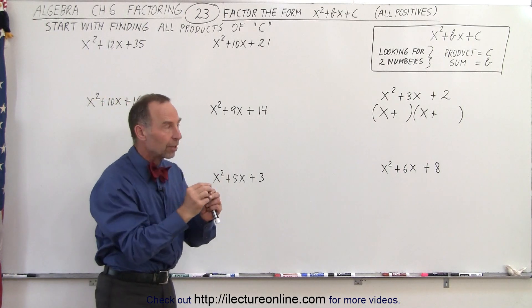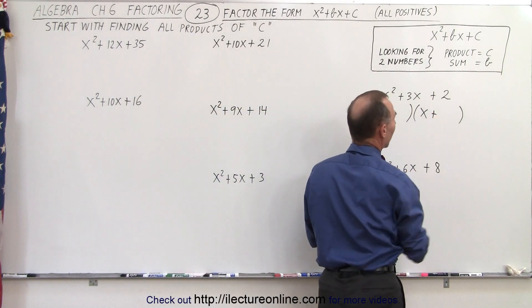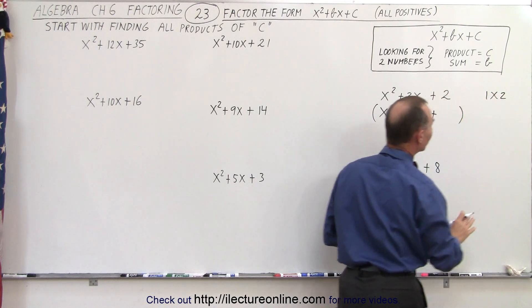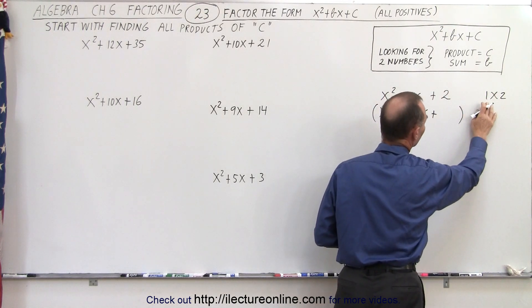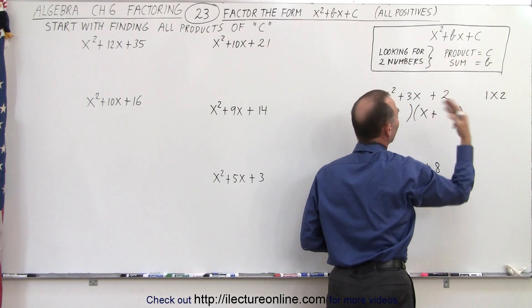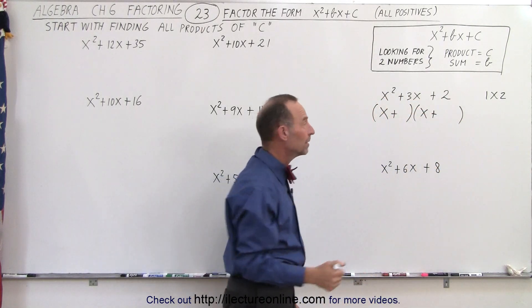What are all the possible products that we can put together to give the number c? Now, in the case of number 2, there's only one option. We have 1 times 2, and that's the only option. So therefore, these are the two numbers. If they add up to the middle term, which is b, then we have a winner. For example, 1 plus 2 equals 3. So therefore, that is the proper combination. So we'll put down 1 and we'll put down 2.